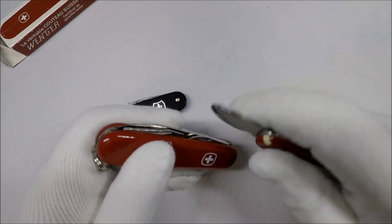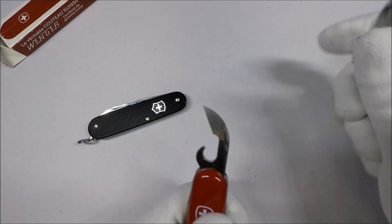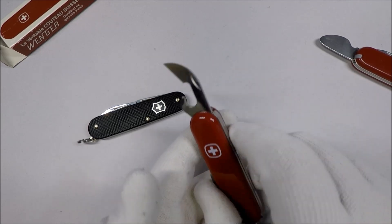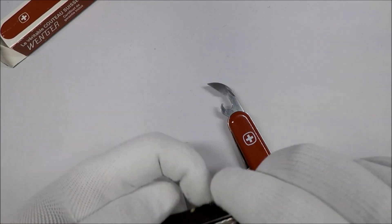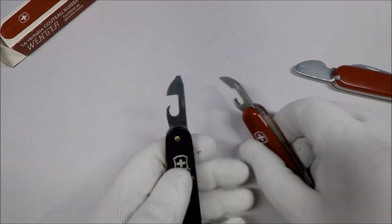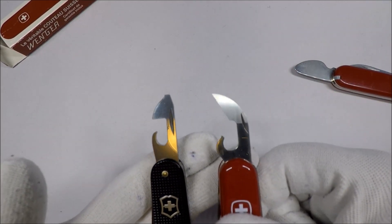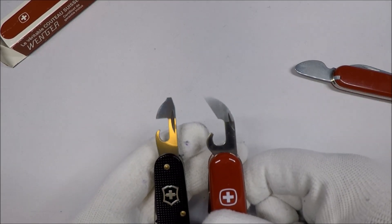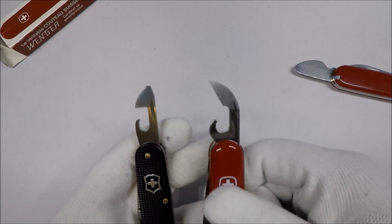And then we got the extra vicious looking Wenger can opener versus the traditional Victorinox can opener. Looks a teeny bit smaller, a little bit thinner, but again this is probably because it's an 84 millimeter.